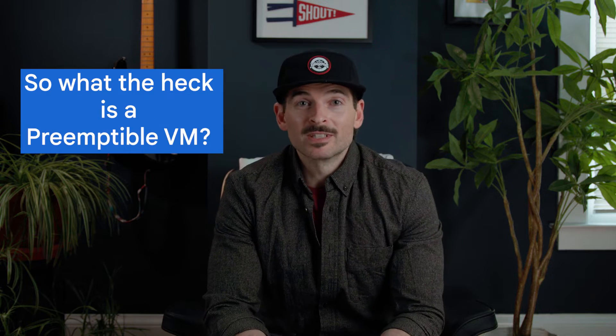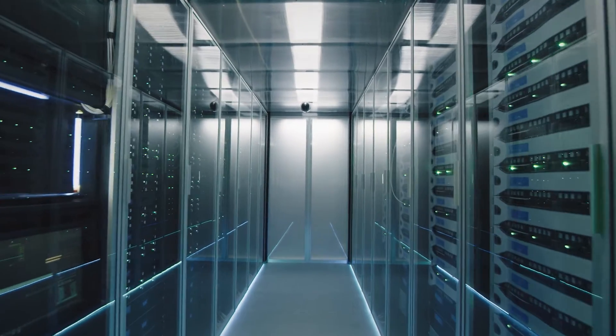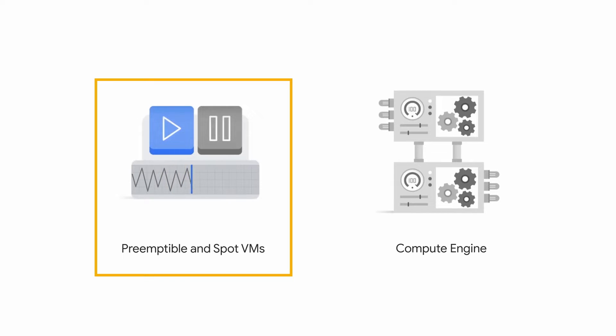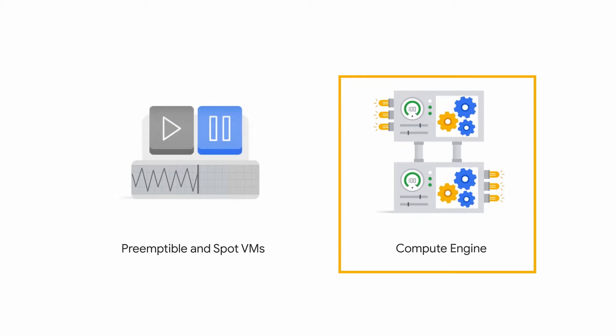So what is a preemptible VM? Preemptible and Spot VMs are virtual machines that work just like any other virtual machine, just at a discounted price. Why is it discounted? Because there's a catch. If Google Cloud needs the resources from your Spot VM, it can stop any application running on it and use those resources for something else.